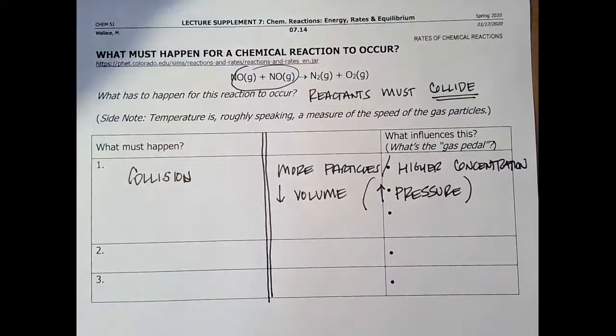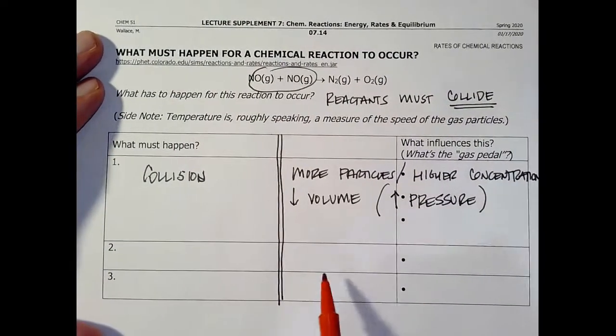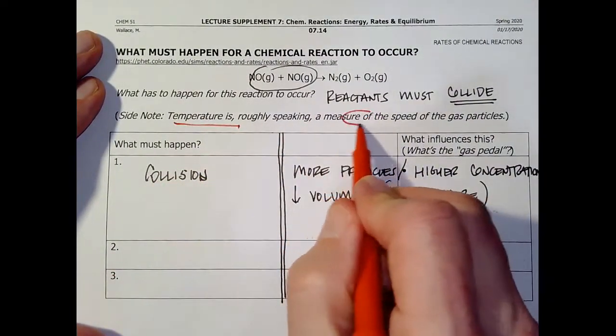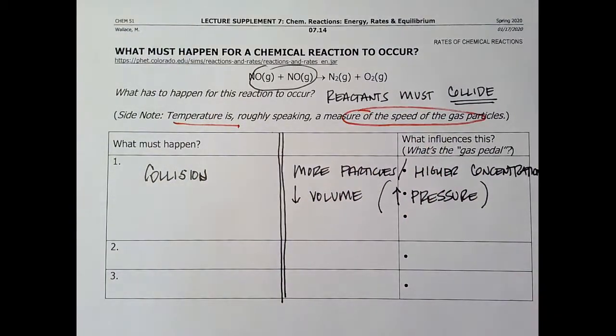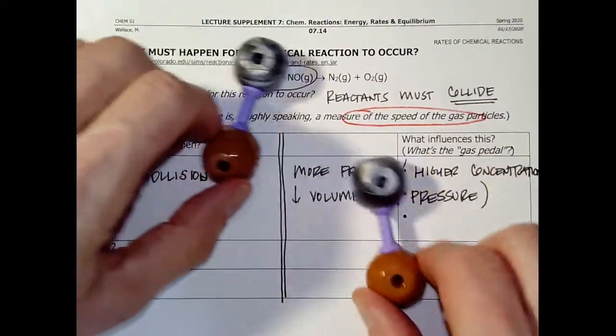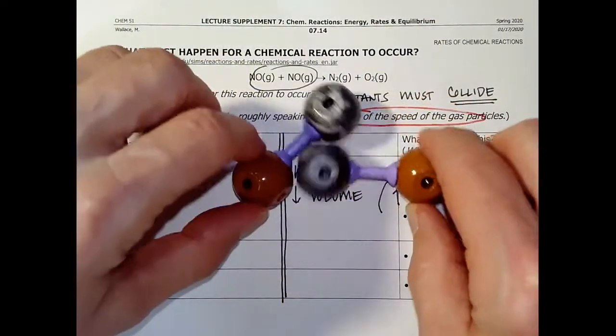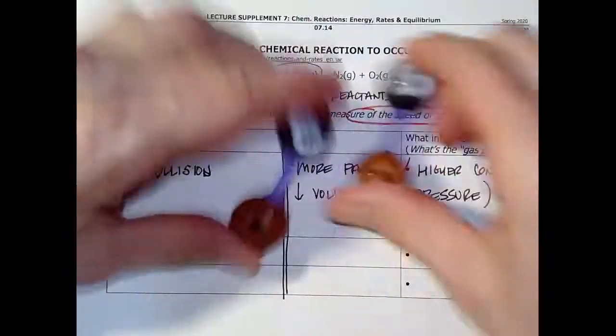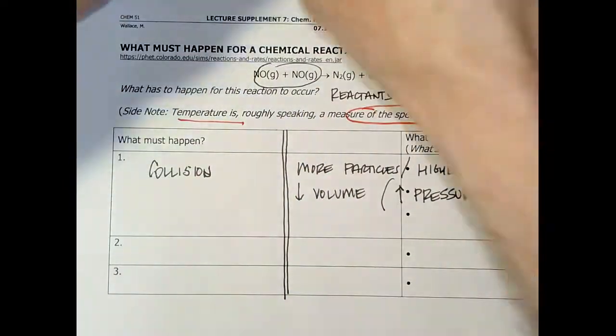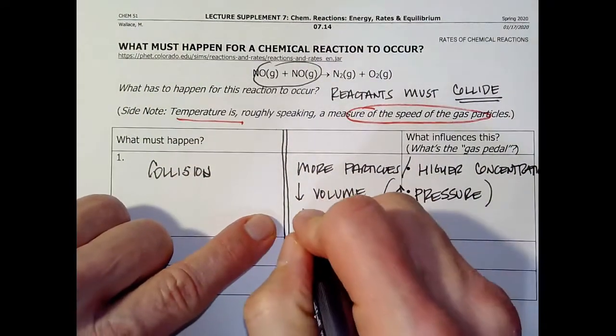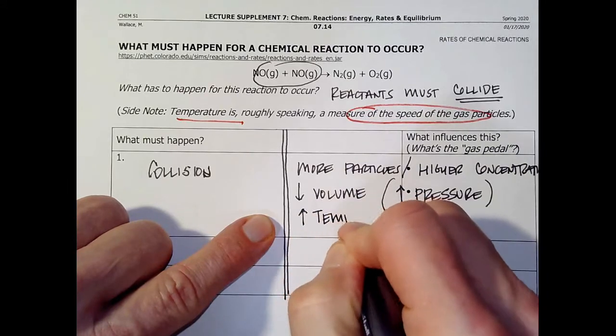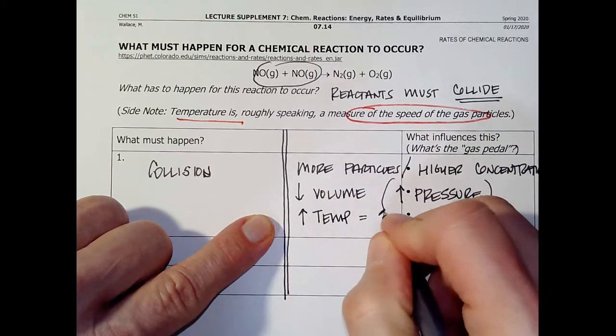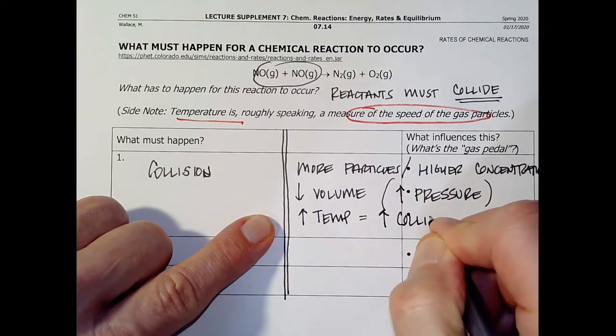And then here's something we haven't talked about. Temperature is roughly speaking, the speed of the particles. It's more complicated than that, but that's a pretty good approximation. Well, if I'm at a low temperature and the particles are bouncing around, once in a while they hit each other. But if I increase the temperature, they're going crazy. I've increased the collision frequency. So I could say, I'll increase the temperature, which is an increase in the collision frequency.